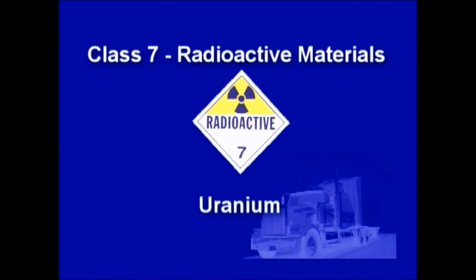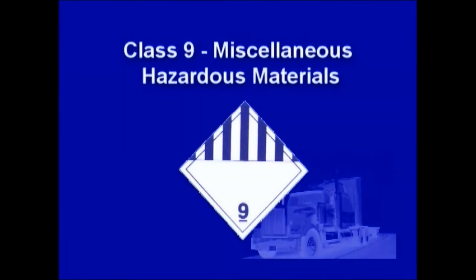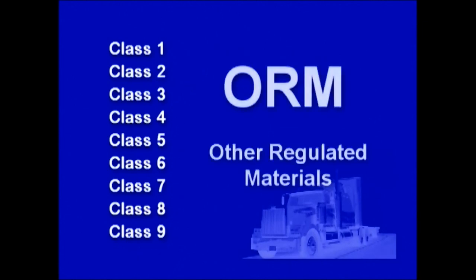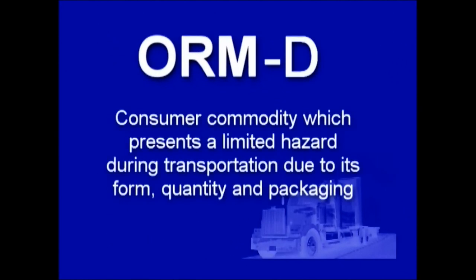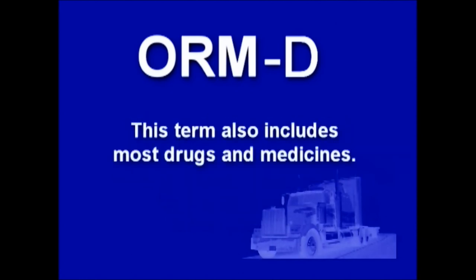Class 7 covers all radioactive material, such as uranium. Class 8 includes corrosive materials, such as acids. Class 9 covers miscellaneous materials — essentially consumer products which, when packed in small quantities, do not pose any particular danger. In addition to the nine classes, there are other regulated materials, or ORMs. These are any materials that pose an unreasonable risk to health, safety, and property when transported in commerce, and do not meet any of the definitions of the other hazard classes. An ORM-D is a consumer commodity which presents a limited hazard during transportation due to its form, quantity, and packaging. ORM-D classifications are common for materials packaged and distributed in a form intended for retail sales — materials for personal care or household use. This term also includes most drugs and medicines.